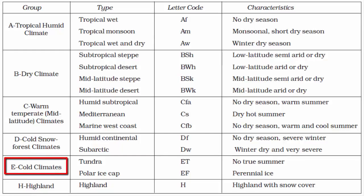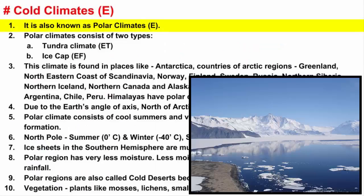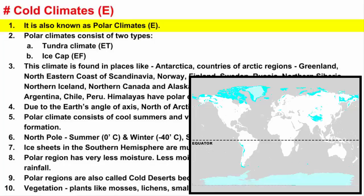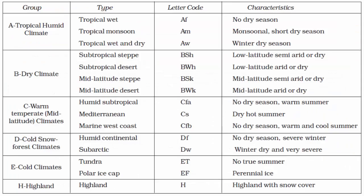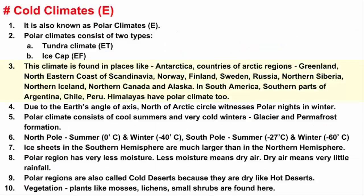In this video, we will learn about Group E of Köppen Climatic Classification. Group E stands for Cold Climates, also called Polar Climates. Polar Climates exist poleward beyond 70 degrees latitude. Polar Climates consist of two types: Tundra Climate, denoted by ET, and Ice Cap, denoted by EF.